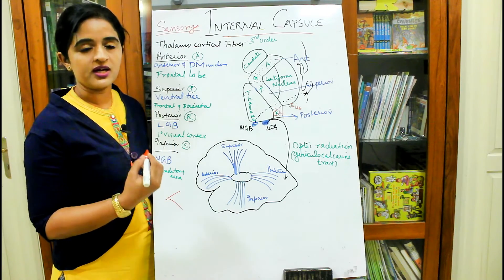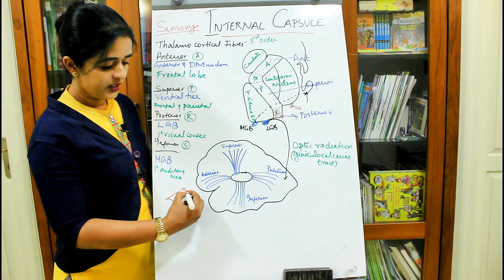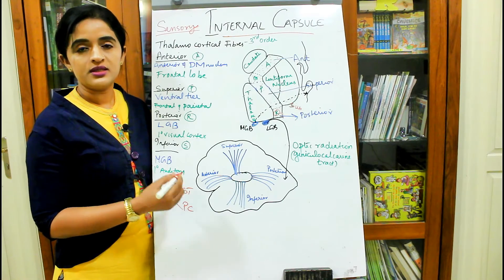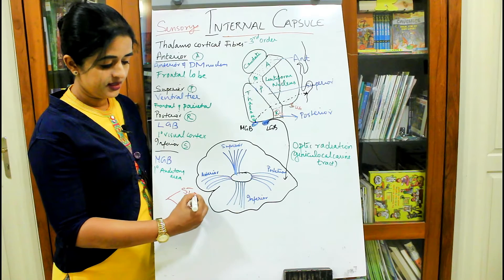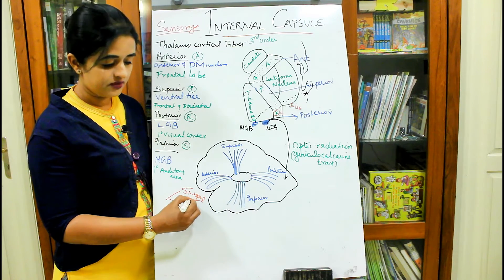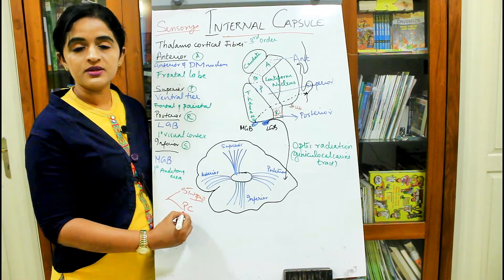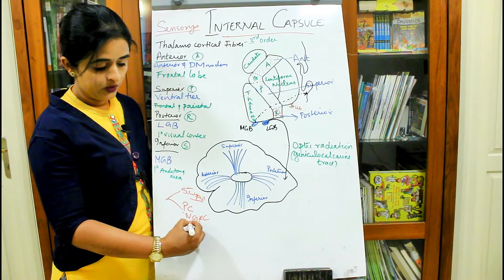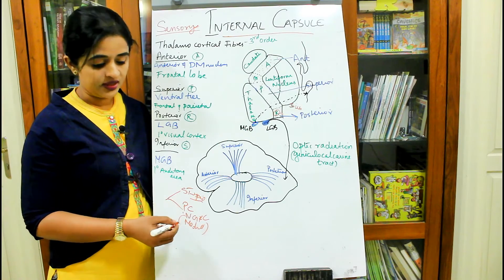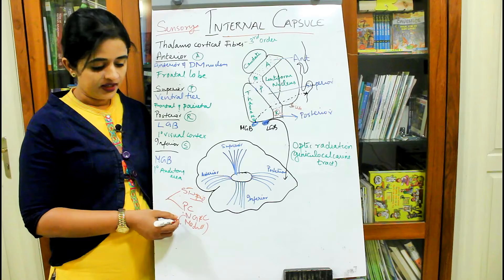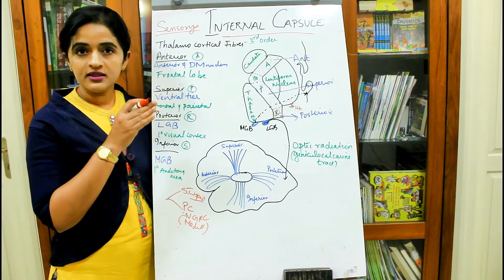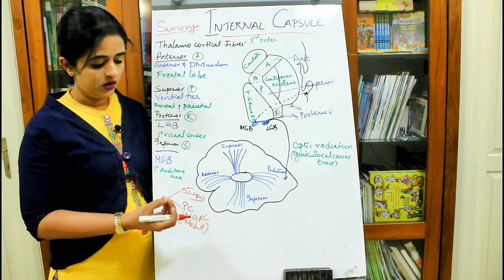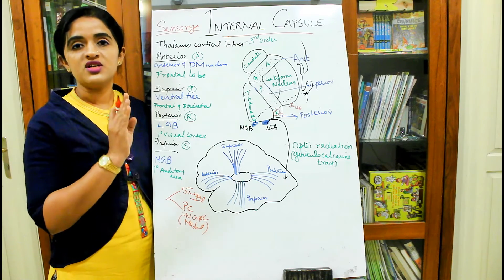So there are two types of fibers projected to the cerebral cortex: spinothalamic and posterior column. For spinothalamic fibers, the first-order neuron ends at the spinal cord and the second-order neuron starts from there. For posterior column fibers, the first-order neuron ends at nucleus gracilis and nucleus cuneatus in the medulla, and the second-order neuron arises from the medulla. Both second-order neuron types ultimately end in the thalamus.